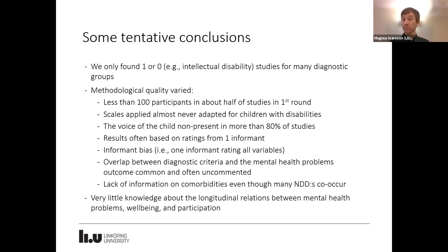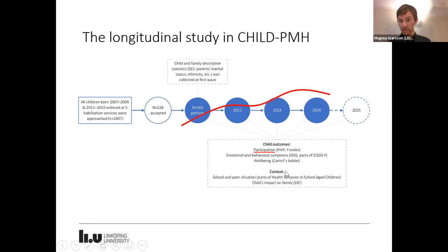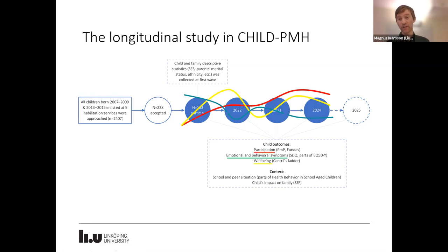We have very little knowledge about longitudinal relations between mental health problems, well-being, and participation. That leads into our ongoing study within ChildPMH. We are conducting a longitudinal study where we collected the first wave of data in spring. We had 163 participants, and we are planning to follow those children for four or five years, collecting data about participation, emotional and behavioral symptoms, and well-being — to see how those three constructs relate to each other. Our plan was to start in March 2020, and we all know what happened then. The pandemic hit Sweden in March 2020, which is probably one explanation for our recruitment difficulties.